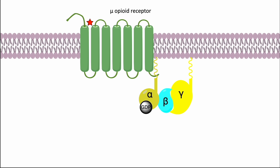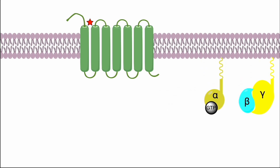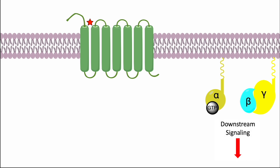G-proteins are attached to the inner surface of the cell membrane and are made up of three protein subunits. Upon binding to the receptor, the G-protein changes shape, allowing the release of the GDP located at the alpha subunit. The empty binding pocket now has the right shape to bind GTP. Binding of GTP results in another conformational change, and the subunits dissociate to form a monomer and a dimer. The subunits depart the receptor and initiate a signal cascade, with substantial amplification because one activated receptor activates several G-proteins before the ligand departs, switching off the receptor.